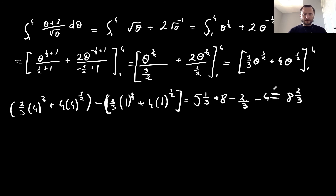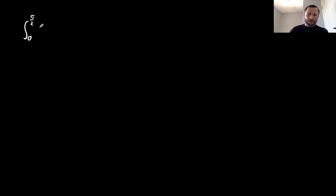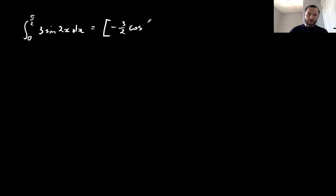Let's look at another example with a trigonometric function. I want to find the value of the integral between 0 and π/2 of 3 sin(2x) dx. The first step is to find the integral: the integral of 3 sin(2x) is minus 3 over 2 cos(2x). I'll find the value of minus 3 over 2 cos(2x) between 0 and π/2.